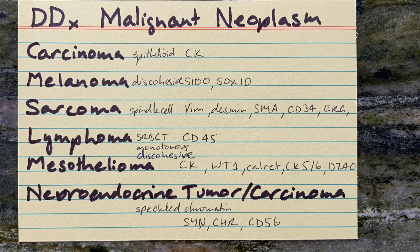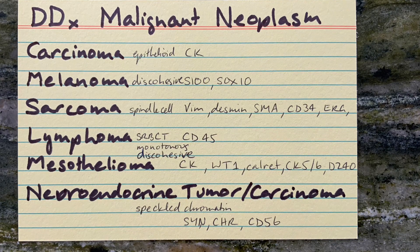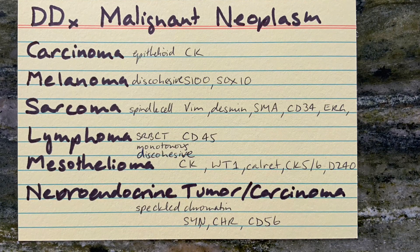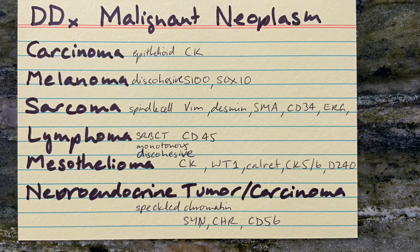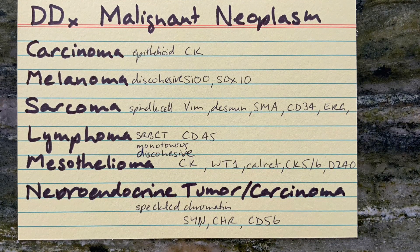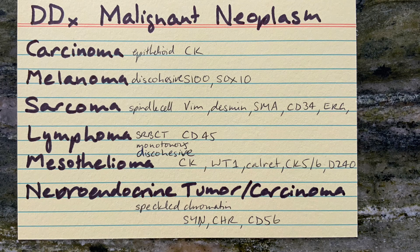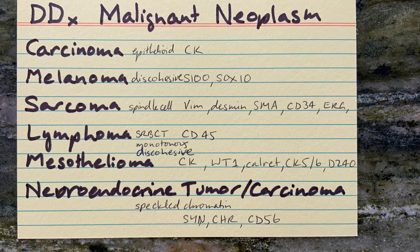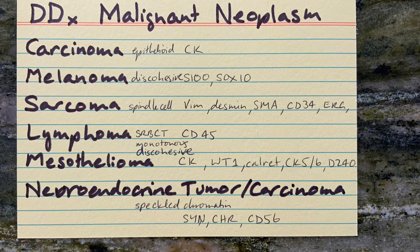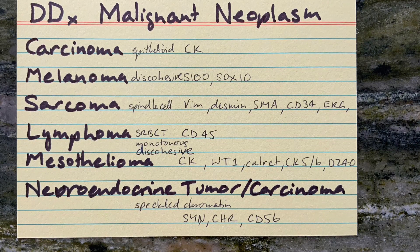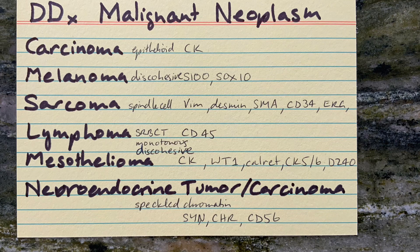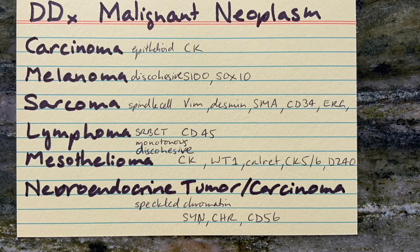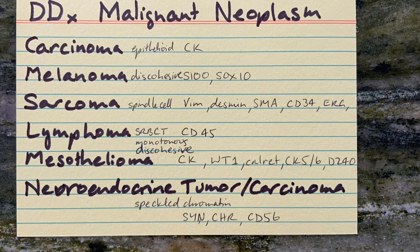Sarcomas have a spindle cell shape. They stain positive with Vimentin, Desmin, Smooth Muscle Actin, CD34, and ERG — depending on what type of sarcoma they are.